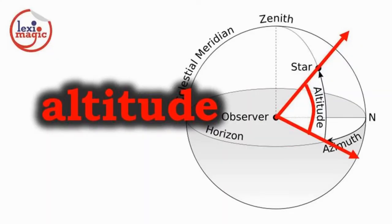Altitude is the angular position of a celestial body in relation to the observer's horizon, which is measured in degrees.